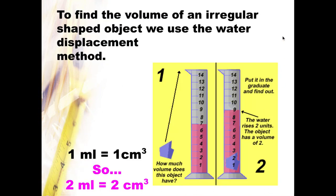To find the volume of an irregular shaped object, we use the water displacement method. We take a given amount of liquid, preferably water, and we're going to drop our oddly shaped object that we can't do length times width times height. And we're going to measure the displacement. So in this case, it rises two units. So the object has a volume of two milliliters, which is equal to two cubic centimeters.